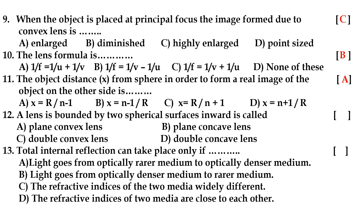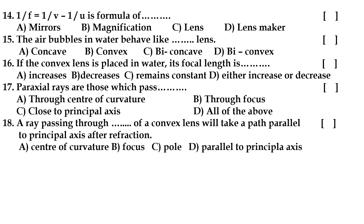Twelfth question: a lens bounded by spherical surfaces curving inward is called option D, double concave lens. Thirteenth question: total internal reflection can take place only if option B — light goes from an optically denser medium to a rarer medium. Fourteenth question: 1/f = 1/v − 1/u is the formula of option C, the lens equation or lens formula.